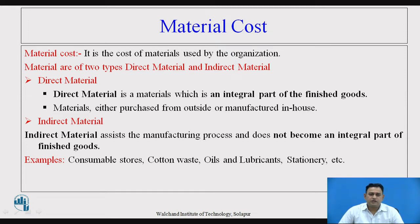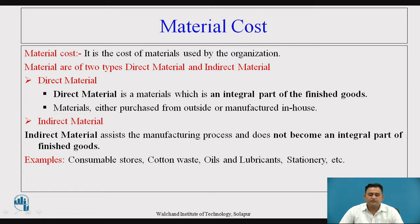The material costs are of two types: one is the direct material and the second one is the indirect material. The direct material is a material which is going to be the internal part of the overall finished good, or you can say the end product. These materials may be sourced within the organization or purchased from outside. The indirect materials are the materials which are associated with the manufacturing process, but they are not going to be the internal part of the finished good.